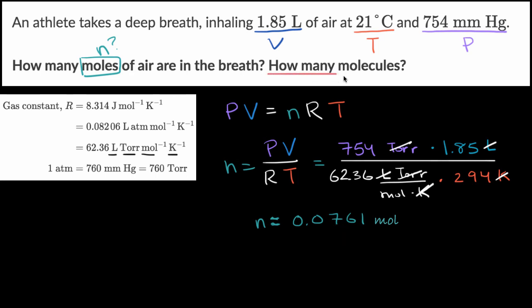Now the next question is, how many molecules is that? Well, we know that each mole has roughly 6.022 times 10 to the 23rd molecules in it. So we just have to multiply this times 6.022 times 10 to the 23rd. So we could write 0.0761 moles times 6.022 times 10 to the 23rd molecules per mole.